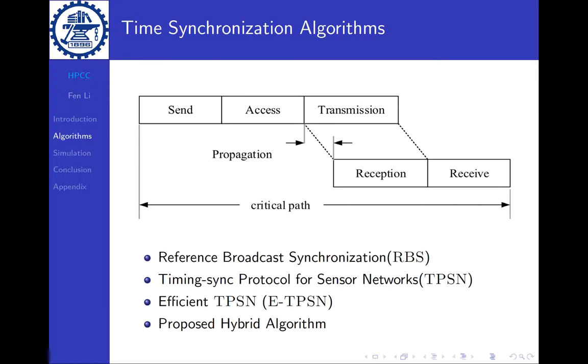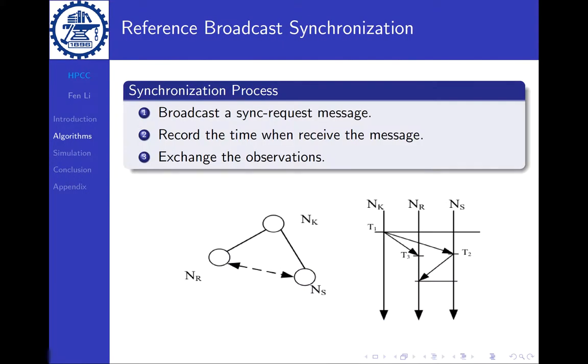Now let's look at two traditional algorithms, which are Reference Broadcast Synchronization and Timing-sync Protocol for Sensor Networks. They are known as RBS and TPSN. In this paper we modified the TPSN to make it an Efficient TPSN, which we call E-TPSN, and then based on that we will propose our hybrid algorithm.